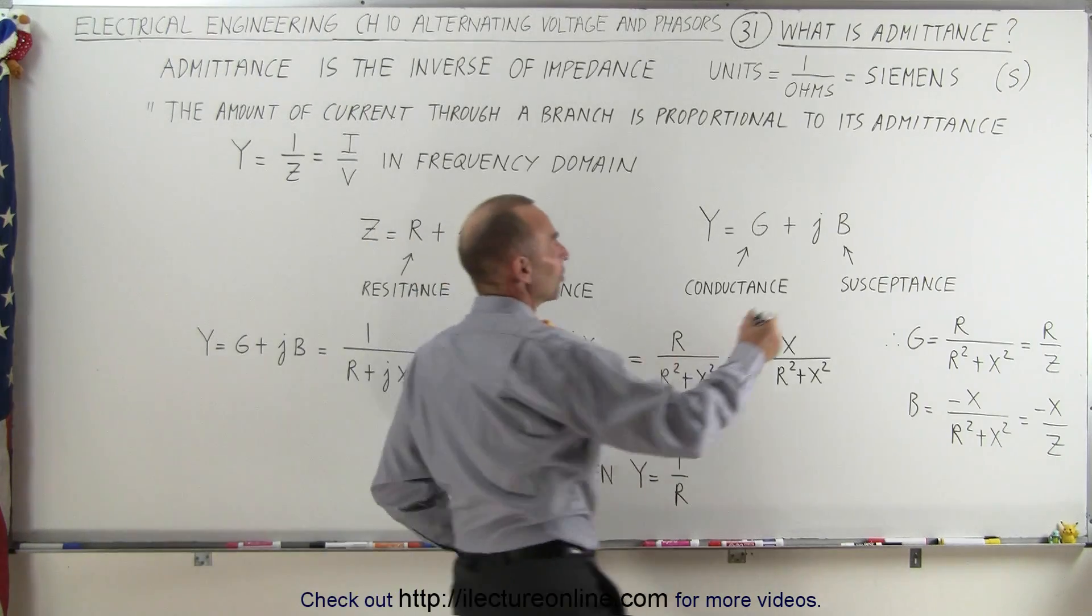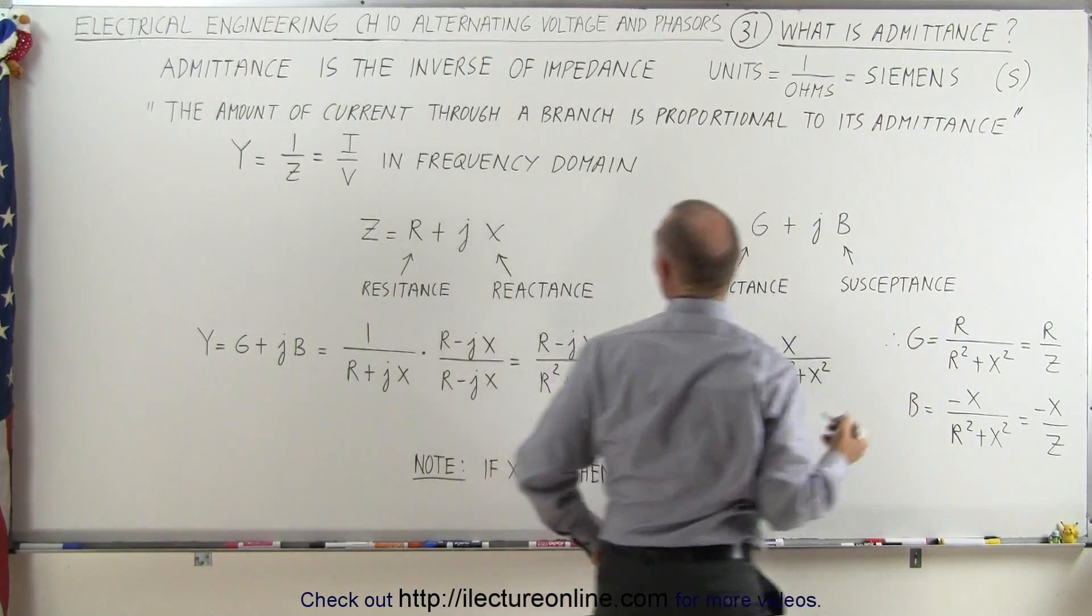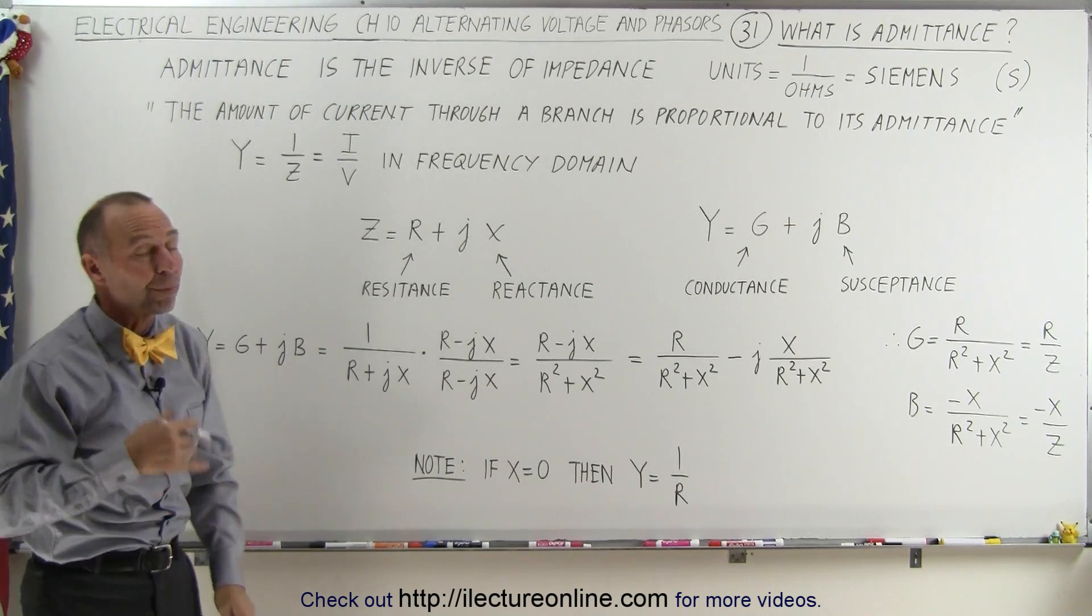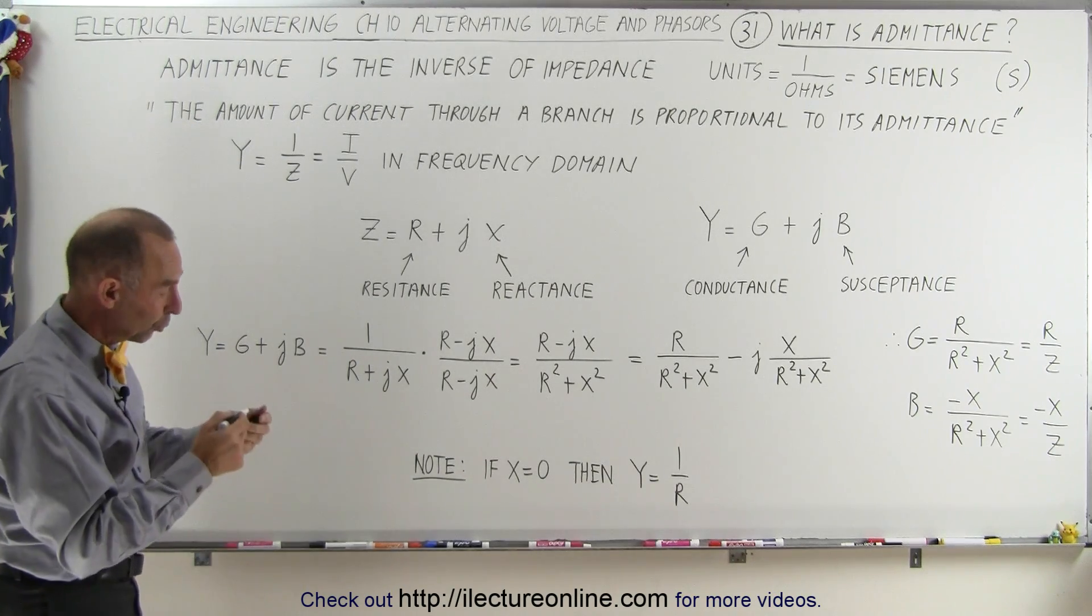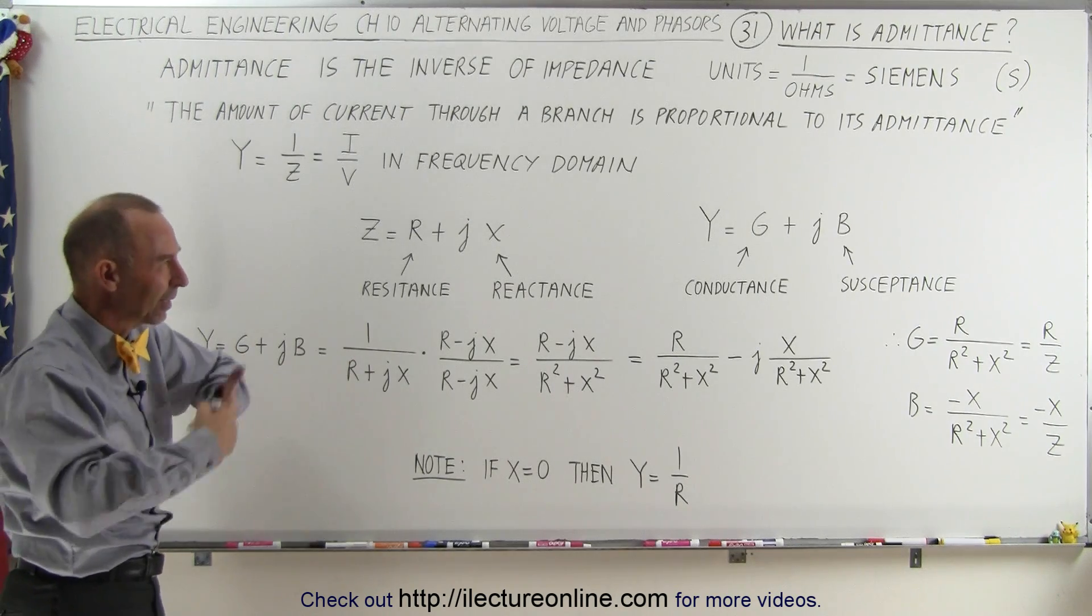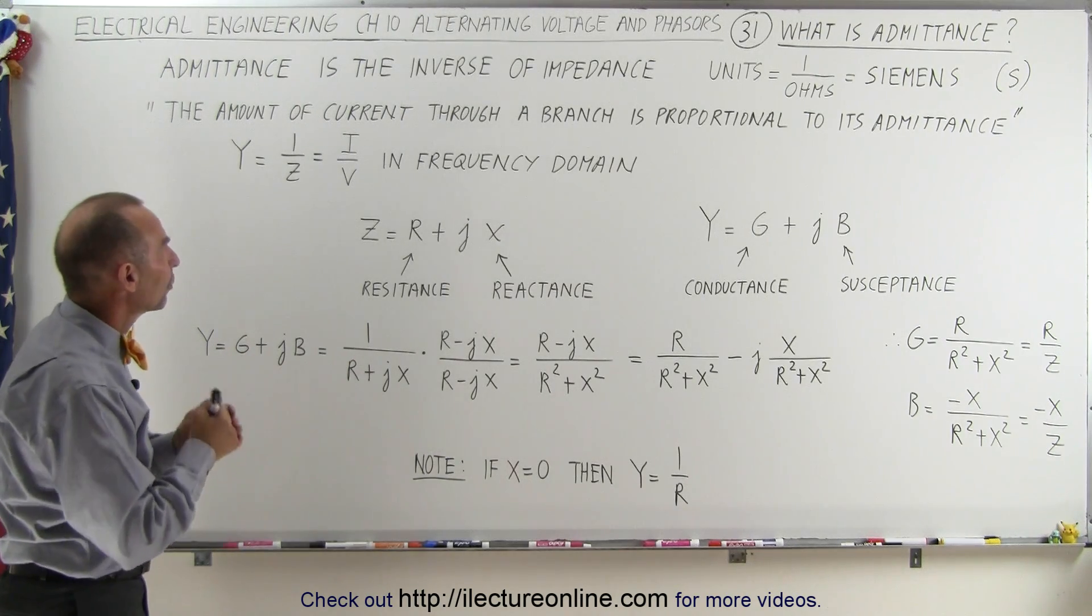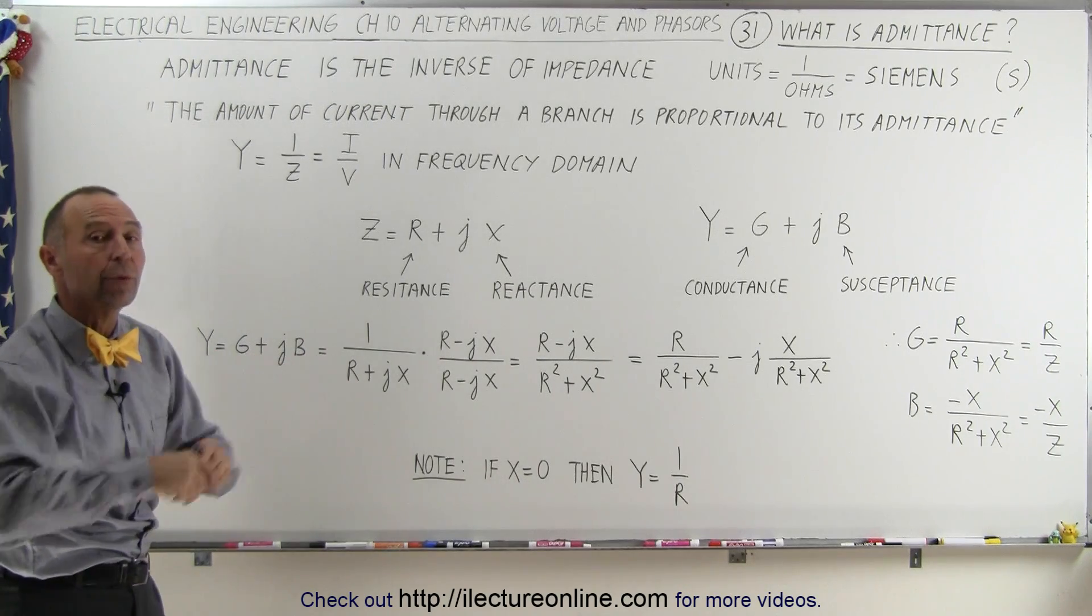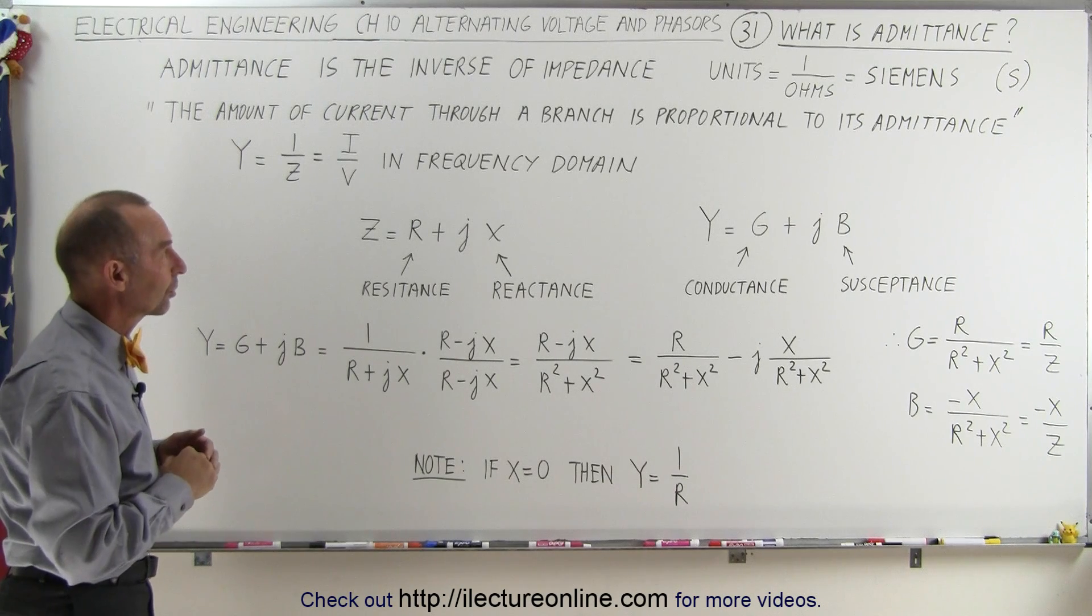Another way to look at it would be to read this sentence: the amount of current through a branch is proportional to its admittance. Admittance, kind of like the word admit, allowing it to go through. The greater the admittance, the greater the amount of current flowing through a branch in the circuit.